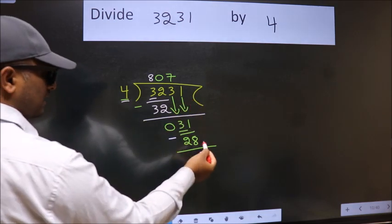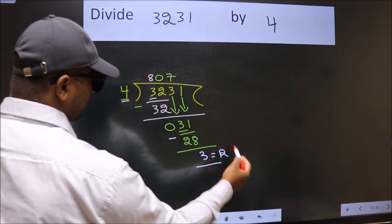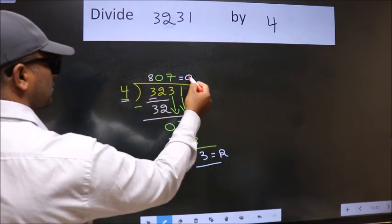No more numbers to bring down. So we stop here. This is our remainder and this is our quotient.